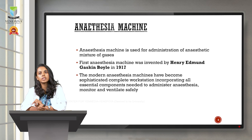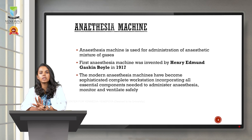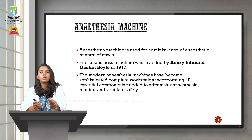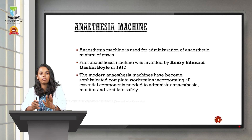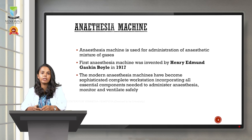The first anesthesia machine was invented by Henry Edmund Gaskin Boyle in the year 1917. A common mistake students make is replacing the word 'invented' with 'discovered.' Discovery means finding something already present in nature, whereas invention means using natural materials to create and innovate something new. So be very careful — the anesthesia machine was not discovered; it was invented by Henry Edmund Gaskin Boyle in 1917, and this first machine was called Boyle's machine.